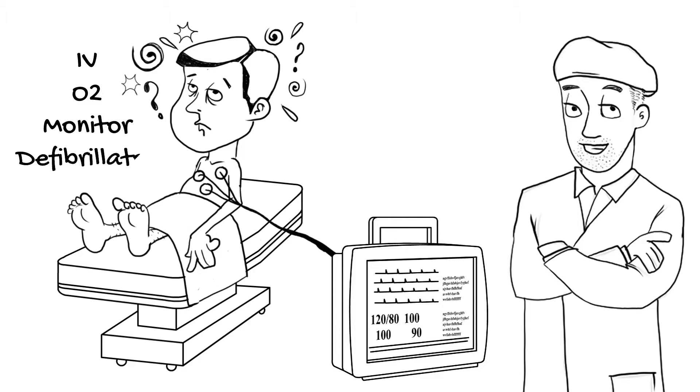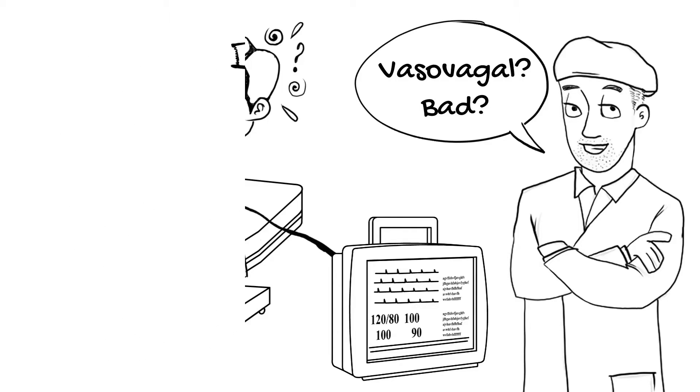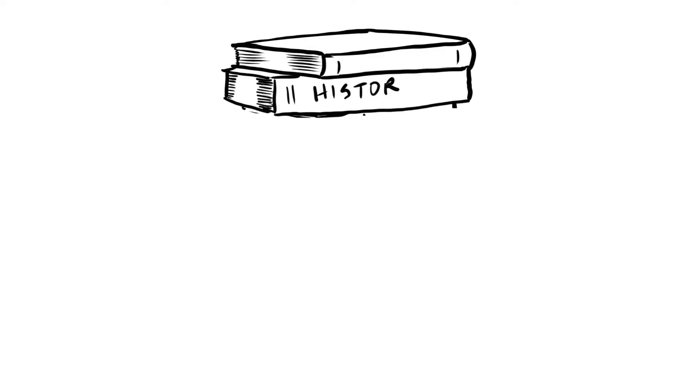What you're doing here is trying to parse out the many people who just have a vasovagal benign form of syncope from the few people who have something very bad. When you first see that patient, if they're stable, you've got time to do the most important thing, which is take a very thorough history.